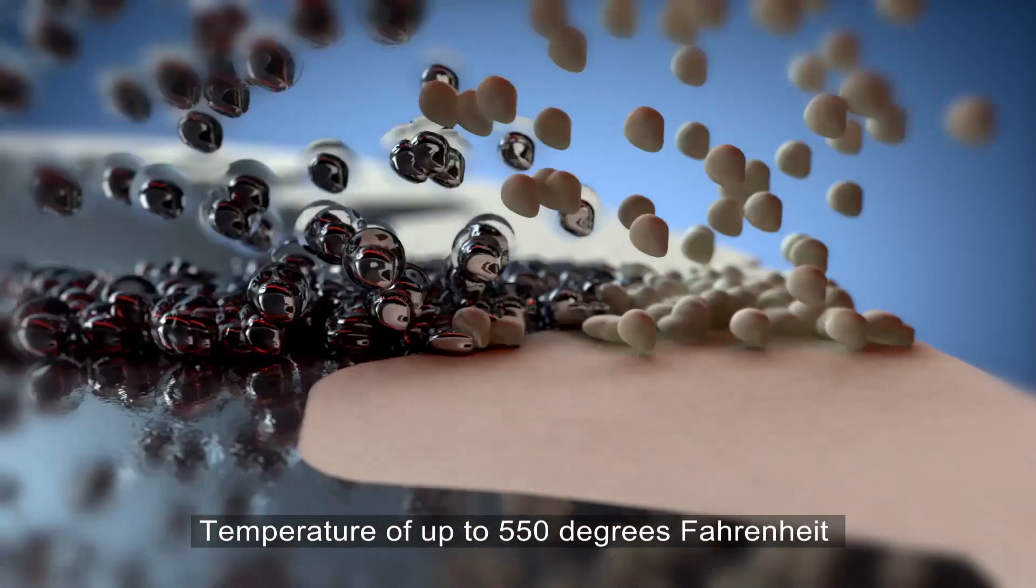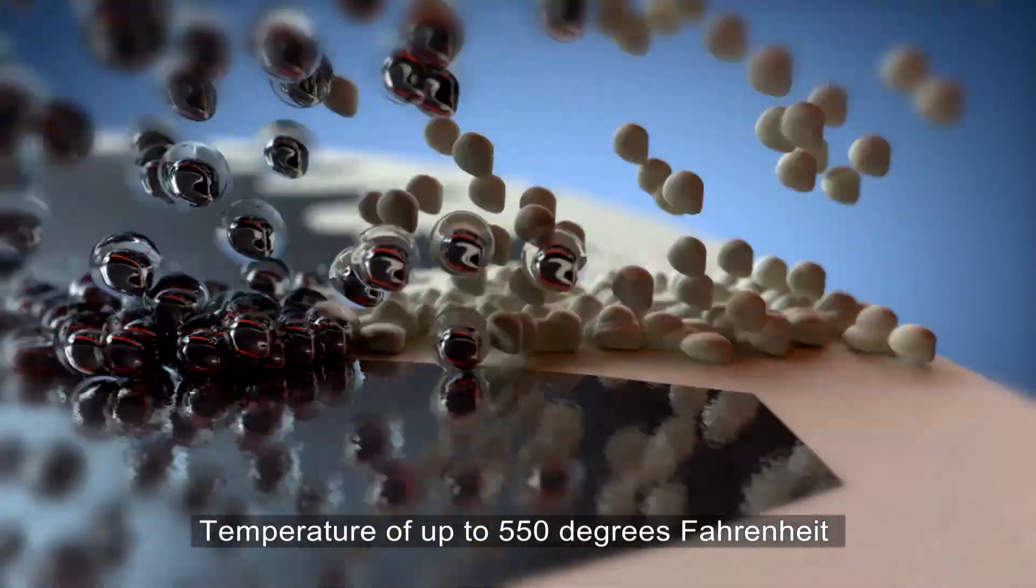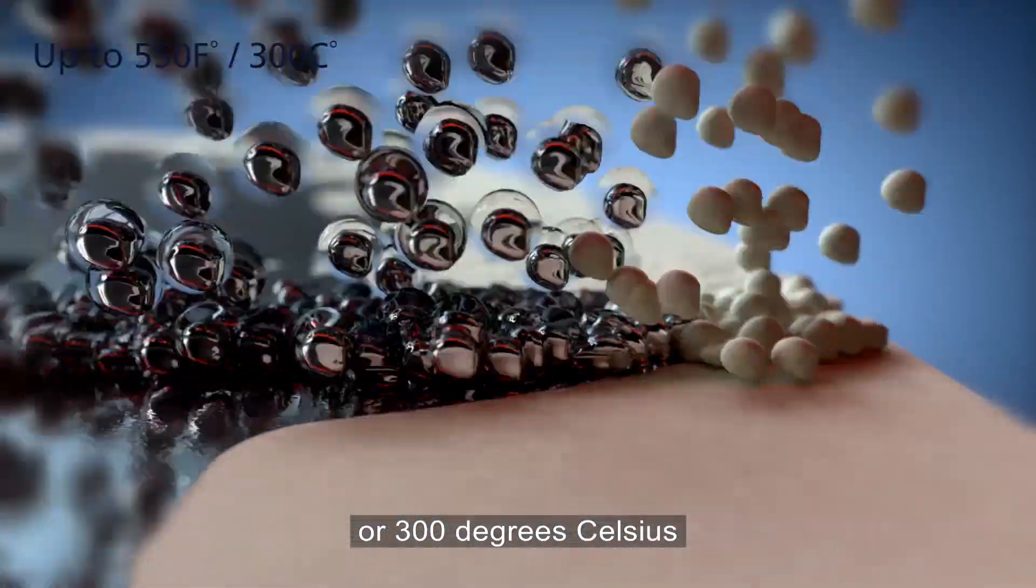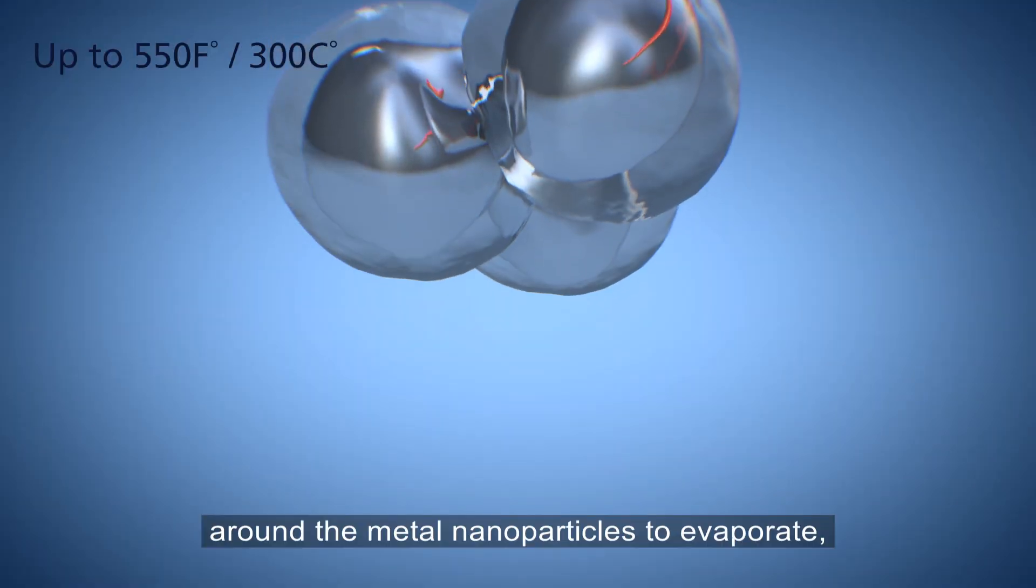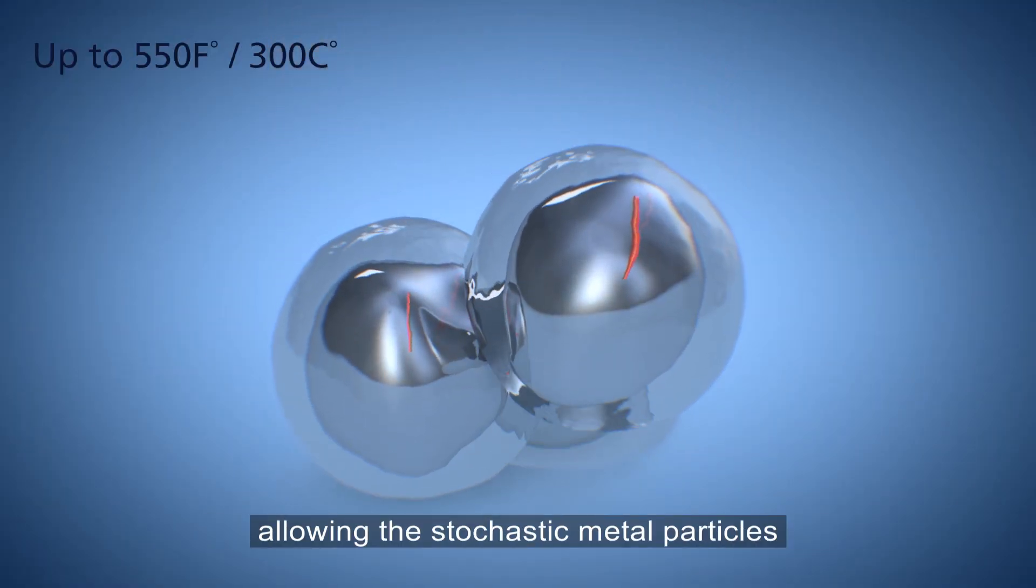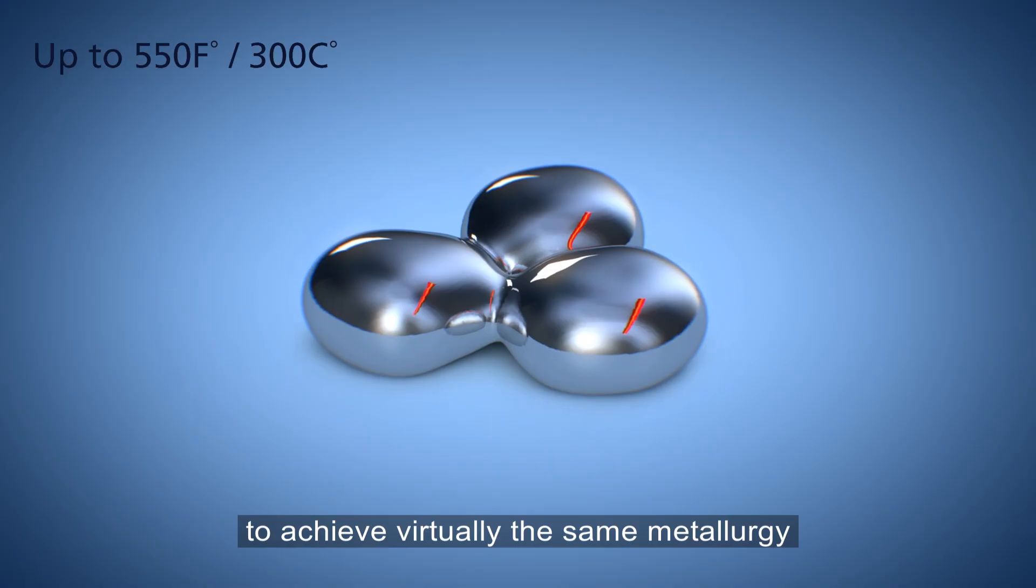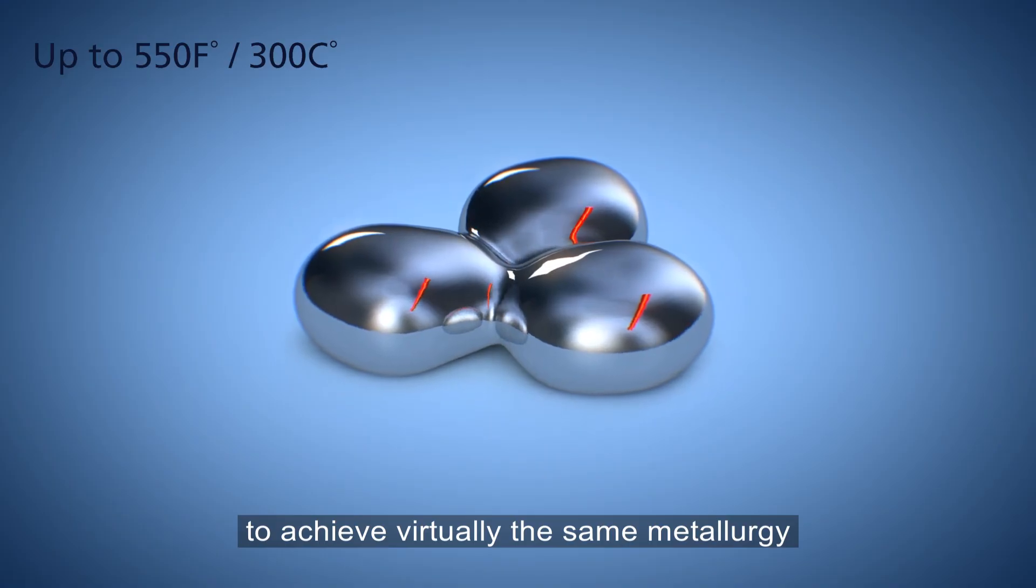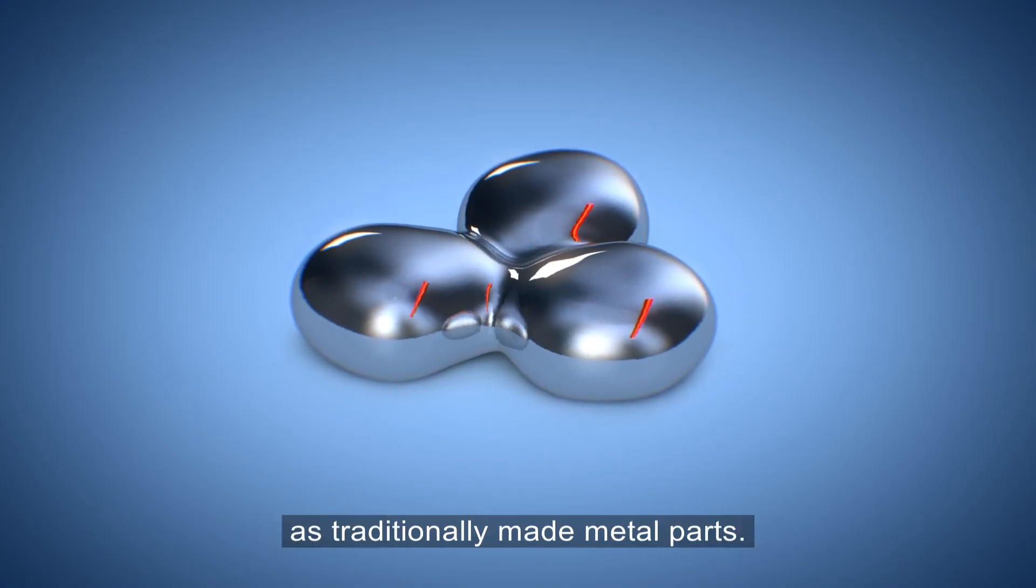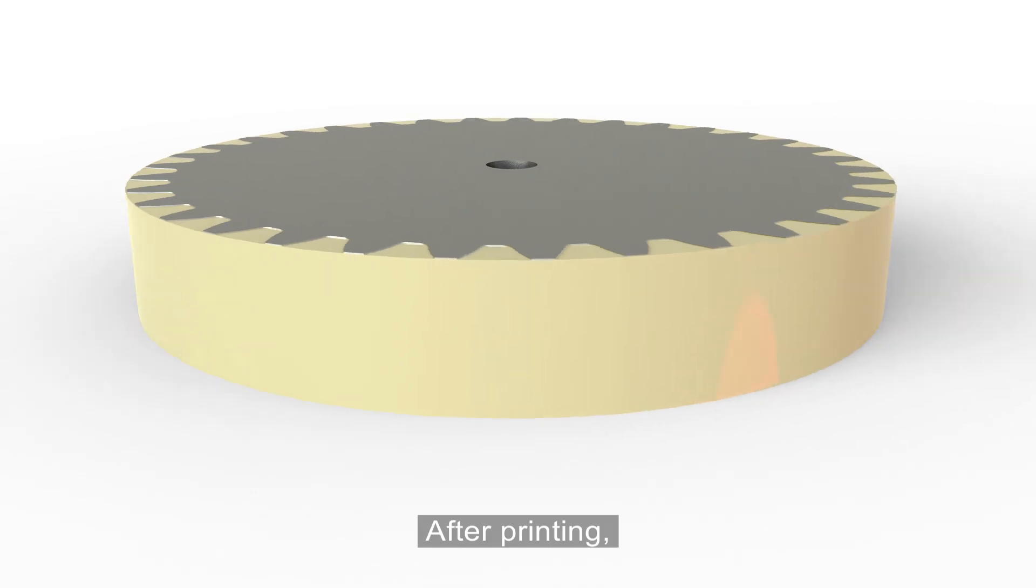Temperature of up to 550 degrees Fahrenheit or 300 degrees Celsius causes the liquid jacket around the metal nanoparticles to evaporate, allowing the stochastic metal particles to achieve virtually the same metallurgy and density as traditionally made metal parts.